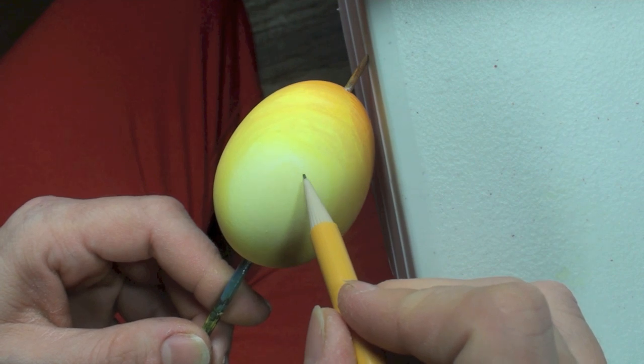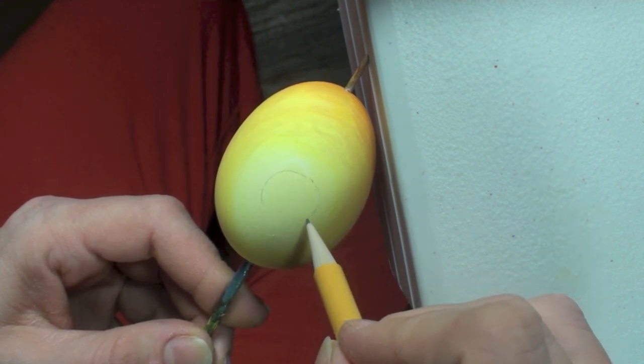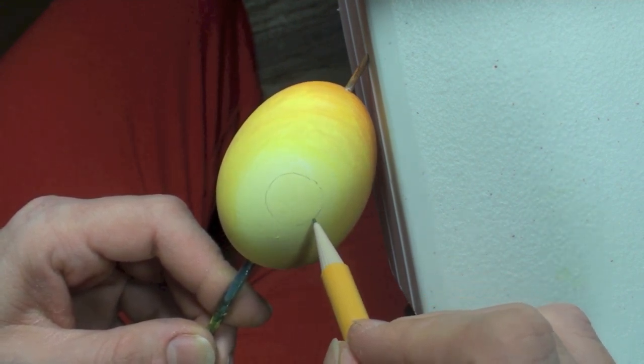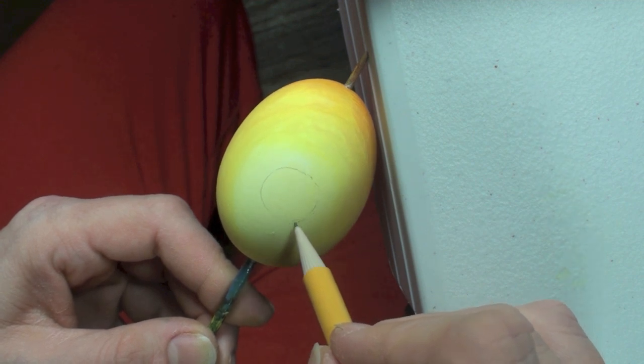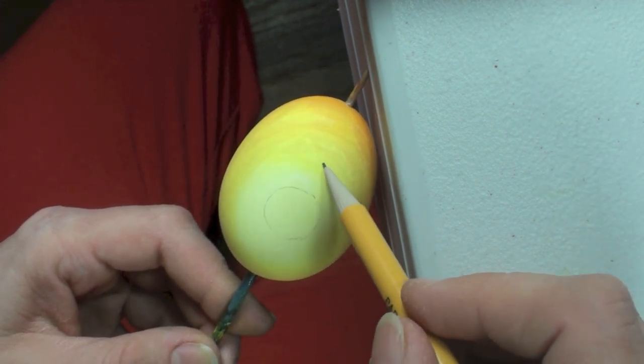Once the paint has dried, we're going to draw up our design with a pencil. This will not only help us later to follow with the brush, but also if we make a mistake now, it's much easier to correct than it is with the paint.